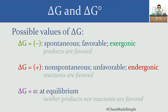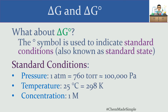At this point we haven't talked about delta G naught at all. The degree sign is used to indicate something called standard conditions, also called standard state — both terms are synonymous. You may have heard of STP, but STP is not this — STP has to do with gases and we'll deal with that in a separate lesson. Here we're just talking about standard conditions, which are spelled out in three things.